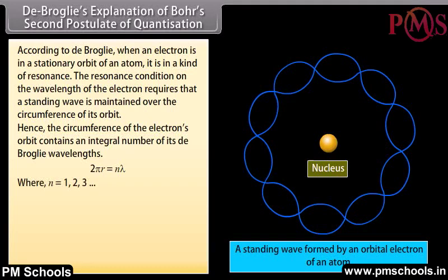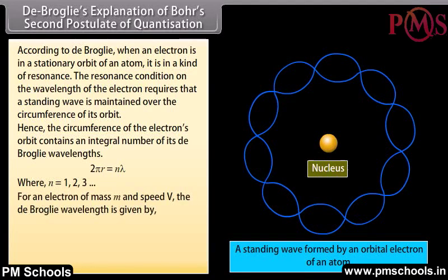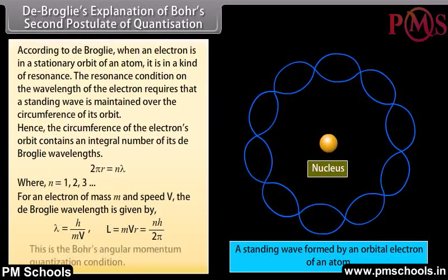Where n = 1, 2, 3, and so on. For an electron of mass m and speed v, the De Broglie wavelength is given by λ = h/(mv). This may be written as mvr = nh/2π, which is the Bohr angular momentum quantization condition.